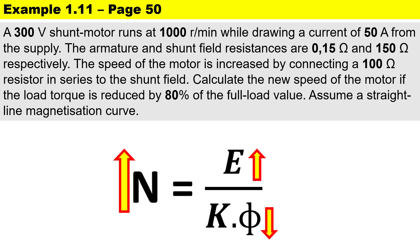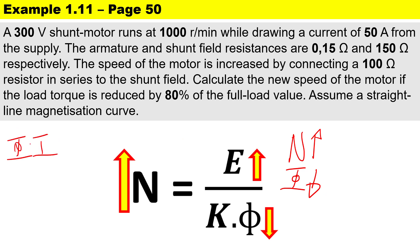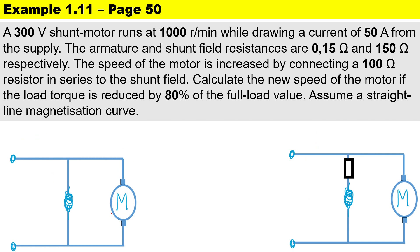By putting a resistance in series with the field winding, we are trying to increase the speed. By increasing the speed we are therefore going to decrease the flux. Because the flux is directly proportional to the field current, this implies that I_field2 should be smaller than I_field1. Always draw your original circuit — this is a shunt motor, so the shunt winding is connected in parallel to the armature, and we have a diverter resistance placed in series with the shunt field winding.